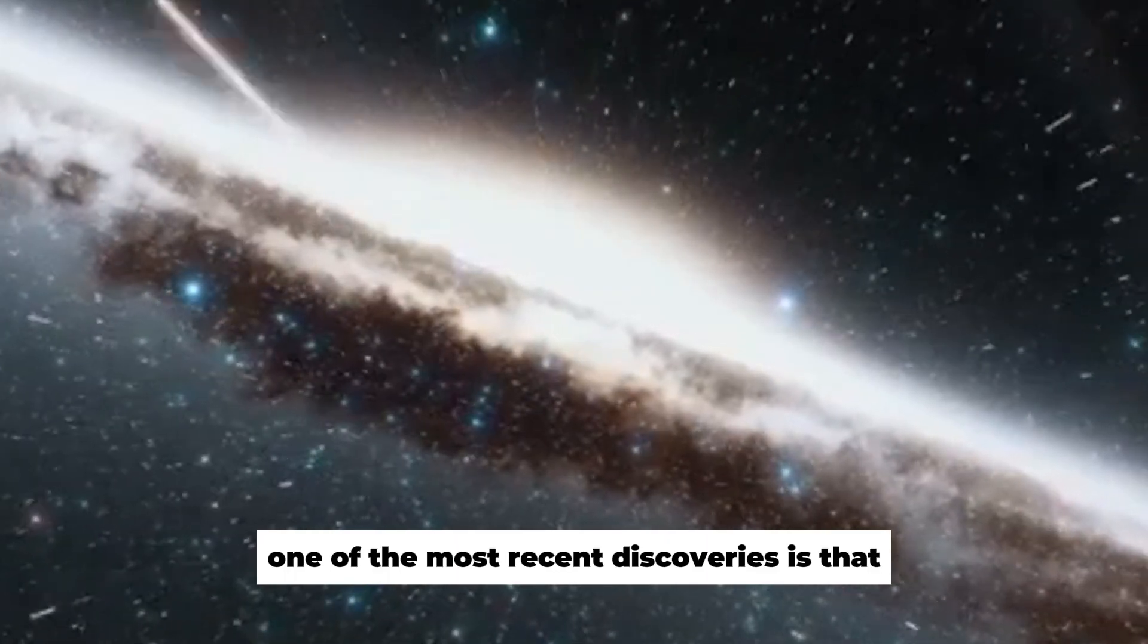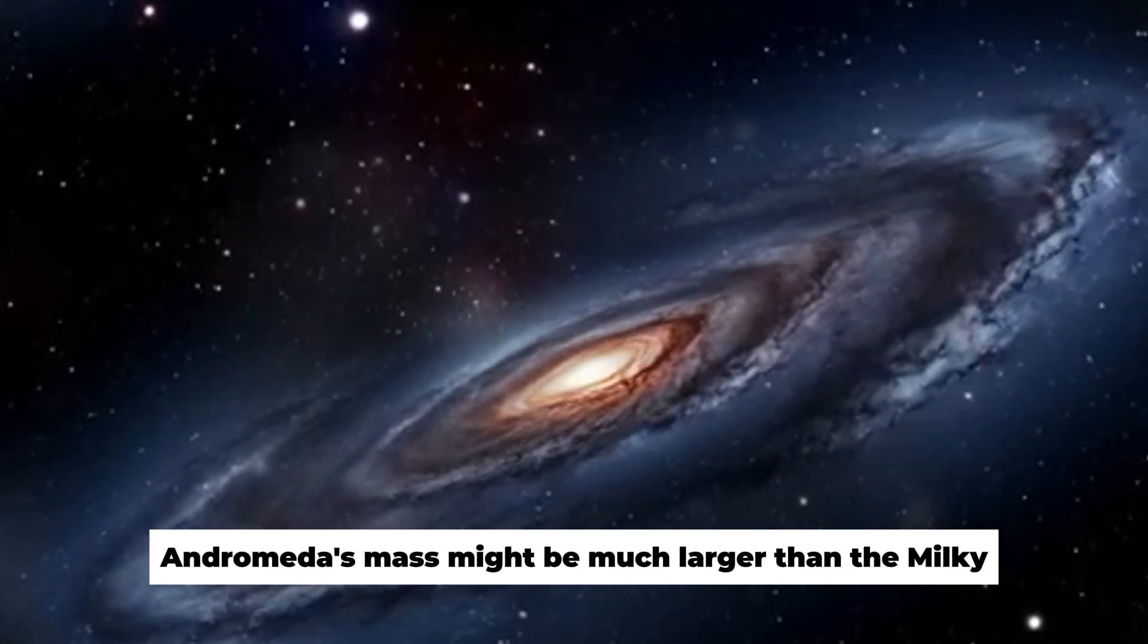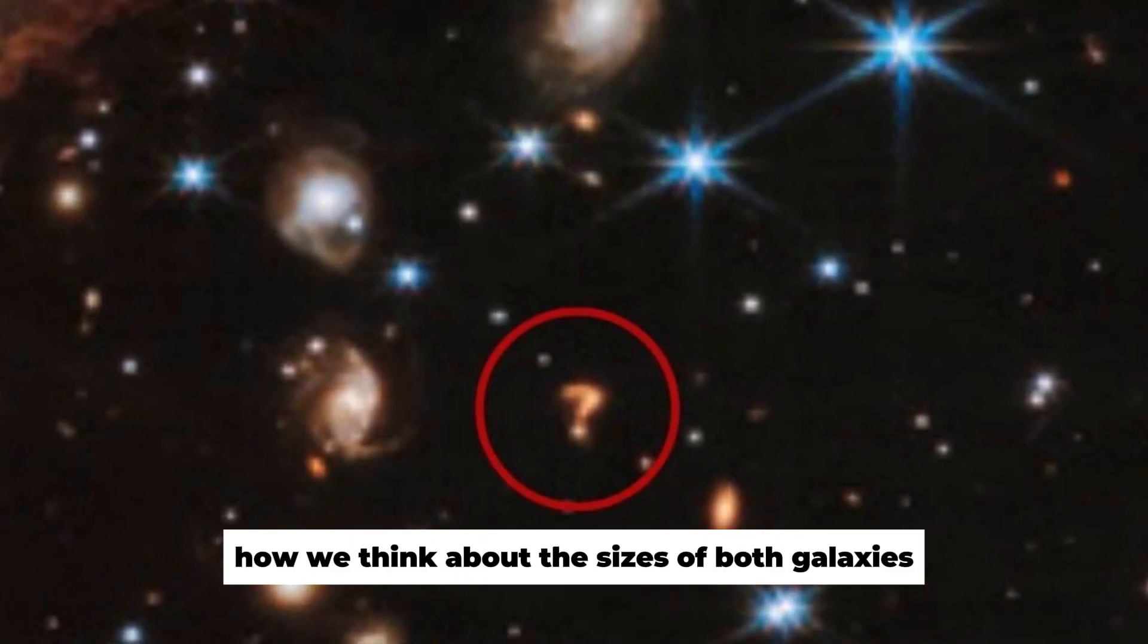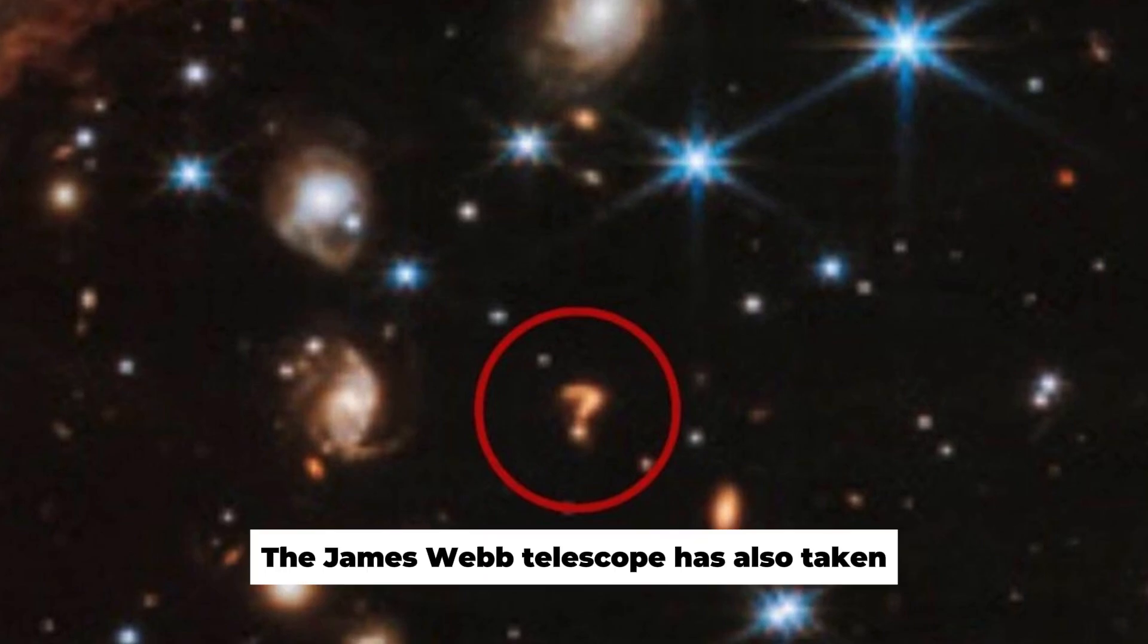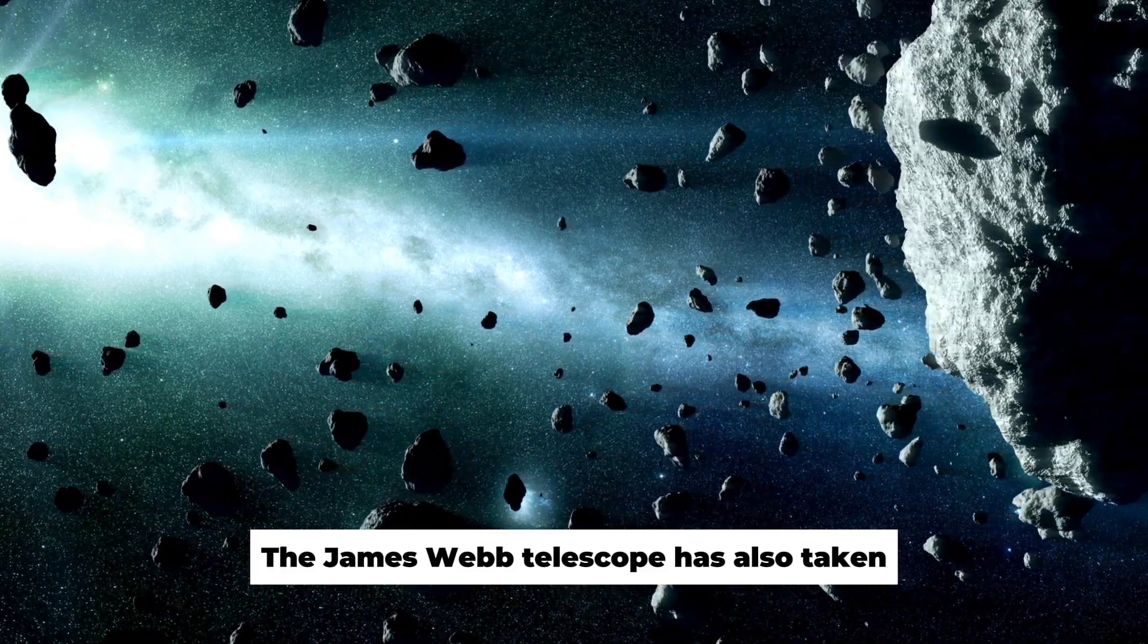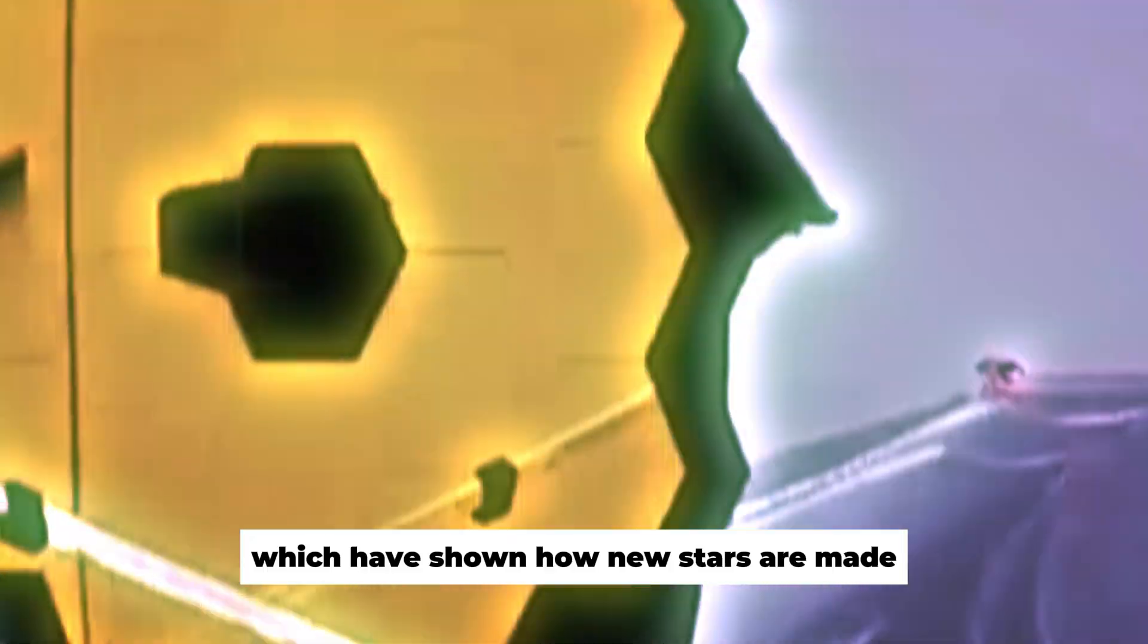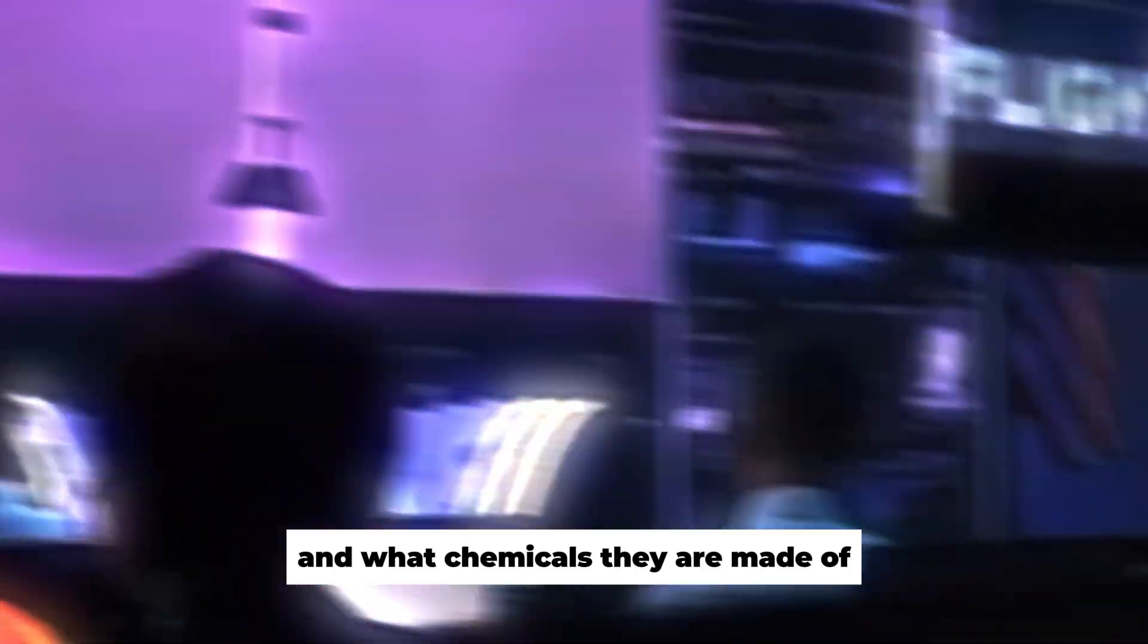The signal sent back to scientists shows results that are very different from what has been seen before, which interests scientists all over the world. The signal shows that there are big things happening inside the galaxy, which might have something to do with its giant black hole or with things that haven't been seen before. One of the most recent discoveries is that Andromeda's mass might be much larger than the Milky Way's.